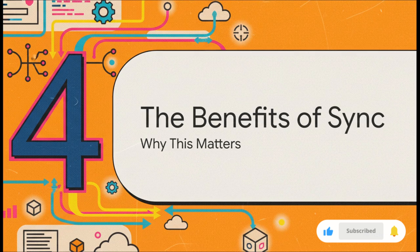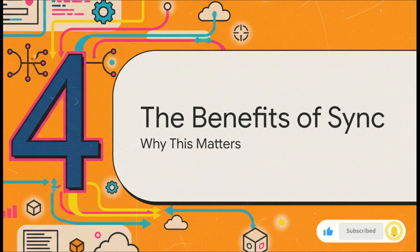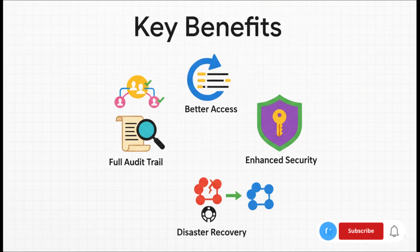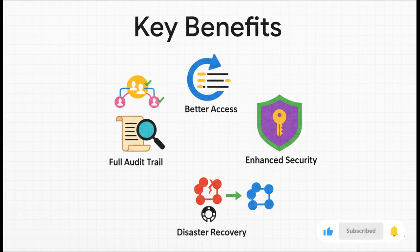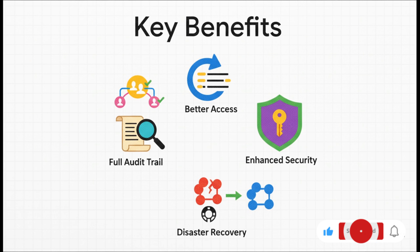The real-world benefits of adopting this GitOps pull-based model are massive. Need to roll back a bad deployment? It's a breeze — just revert a commit in Git. Security is way better because your cluster credentials never have to leave the cluster. Disaster recovery becomes almost trivial: just spin up a new cluster and point it at your Git repo. You get a perfect audit trail because every single change is a logged Git commit, and you can manage permissions by just managing Git access rather than complex cluster roles.